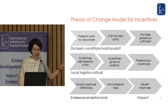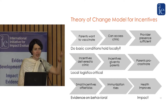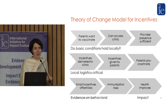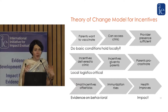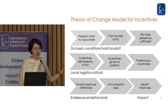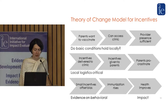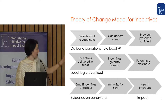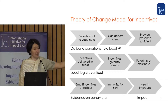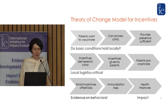Then there are the program delivery elements — the incentives have to get to the parents. And then there's a behavioral component: we think parents procrastinate. One reason people don't invest in preventative healthcare is because they want to do it but just don't get around to it. We think small incentives can offset procrastination and biases. Because they offset those biases, immunization rates rise and health improves. So this is the full theory of change for this program.